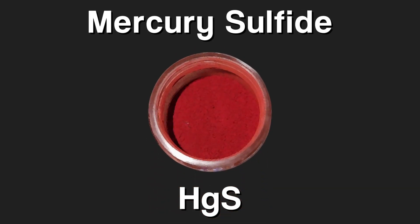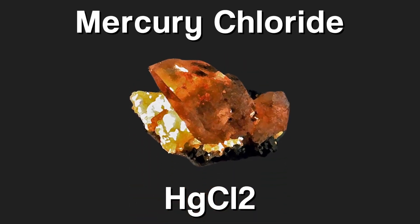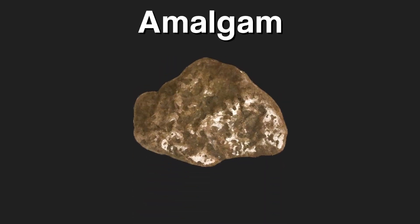Mercury sulfide is a compound that is red, used for tinting and vermilion. Mercury chloride, also known as Calomel, is a toxic and rare mineral. Amalgams are made from other metals and mercury — usually silver or gold, but others can work.